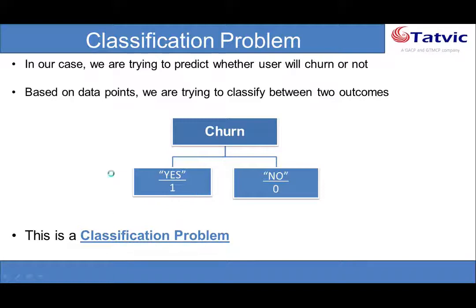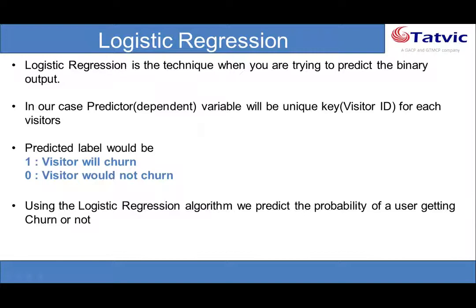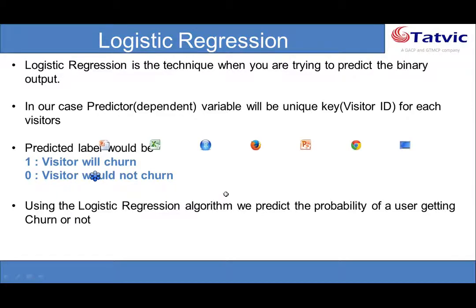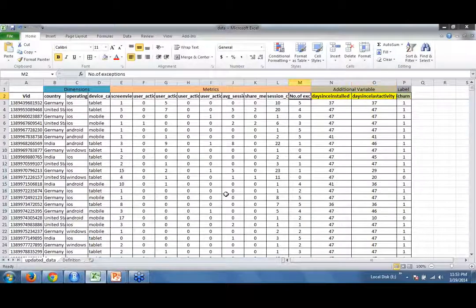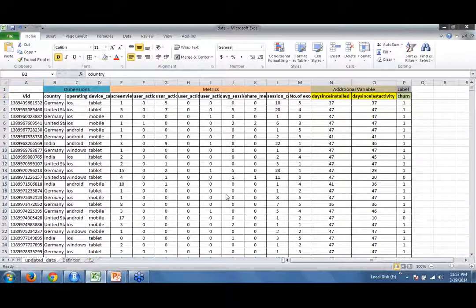We'll understand what logistic regression is. Logistic regression is the technique used when you are trying to predict a binary output. In our case there are only two possibilities: whether the user will churn or not churn. That is why we use logistic regression. In our case the predictor variable is the unique key or visitor ID shown in the Excel file — whether a visitor ID is labeled as churn or not, and this is how we are going to predict using our predictive model.